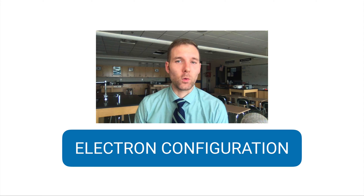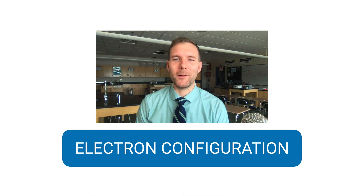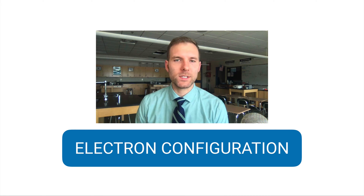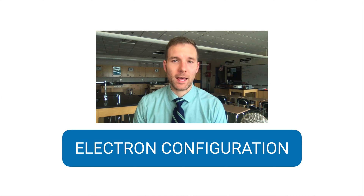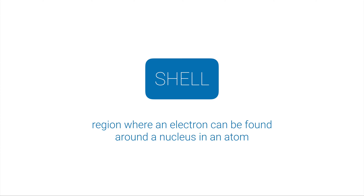In this video we're going to get into the real story behind electron configuration. Last unit we talked about the basics, but I left a lot of the story untold. Here we'll have the full explanation of what's actually going on with these electrons and how they're laid out within an atom. An atom is made up of protons and neutrons in the nucleus, and electrons orbit outside. These seven rings are called shells — regions where an electron can be found around a nucleus.